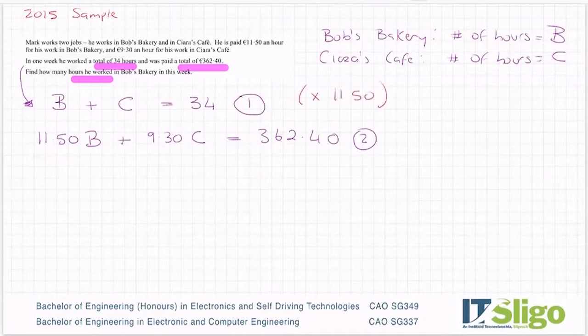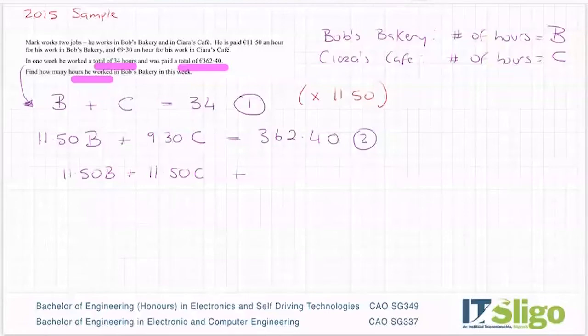So then I go 11.50 by B is 11.50B. 11.50 by C is 11.50C. And then 11.50 by 34 equals 391. That's 11.50 by 34.